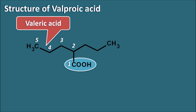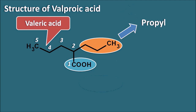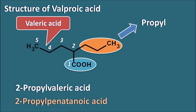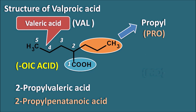Valeric acid has a side chain at the second position — a propyl side chain. So valproic acid can be called two-propyl valeric acid, or by systematic name, two-propyl pentanoic acid. The name 'valproic acid' comes from 'val' from valeric acid, 'pro' from propyl, and 'oic acid' from carboxylic acid — giving val + pro + oic acid = valproic acid.